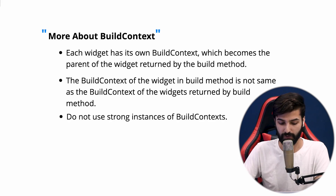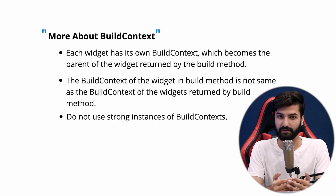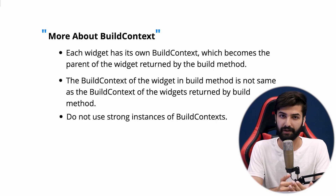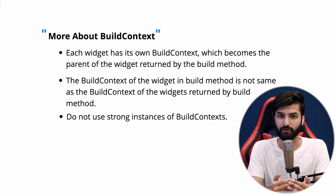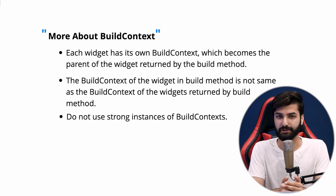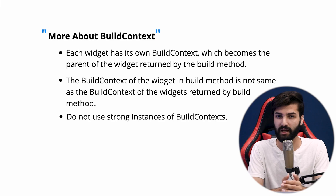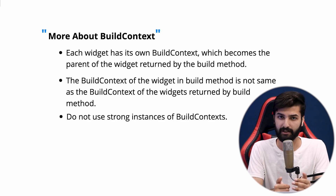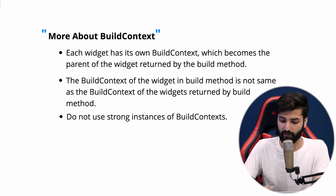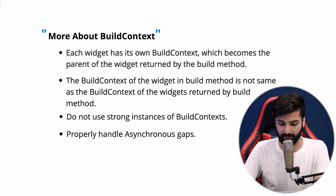The next point about BuildContext: do not store stale instances of BuildContext. Widgets in the widget tree do not stay the same as the user interacts with the application — widgets can become unmounted over time and their context can become invalid, as the widget is no longer associated with the widget tree. This can lead to unexpected behavior and terrible BuildContext errors. Therefore it's recommended to use the immediate context of an operation and avoid storing it for later use, ensuring you always have a valid BuildContext.